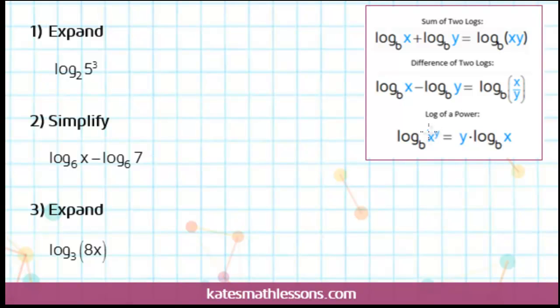This rule says if you have the log of some number to an exponent, this exponent can be taken out in front as a multiplier. So that means we can take this 3 and put it out front and do 3 times log base 2 of 5. So you don't change the base of the log. All you do is take the exponent and it can come out front as a multiplier. So this would be considered the expanded logarithm.